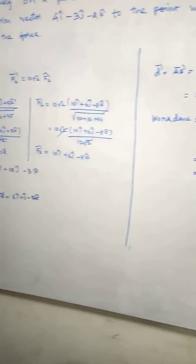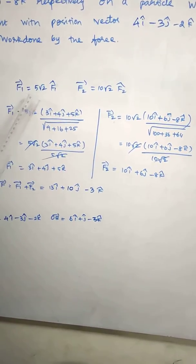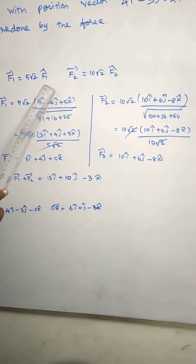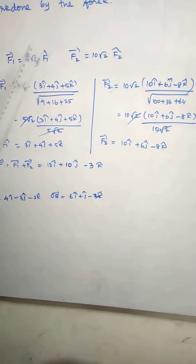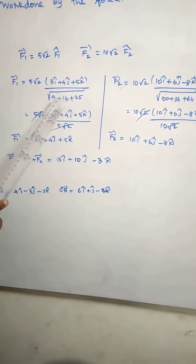Force is equal to - F1 vector is magnitude into unit vector. So F1 hat, 5√2 into direction vector by root of modulus.